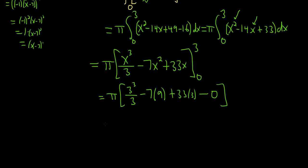So this is going to be, let's see, pi. You lose a copy of the 3 here. So you have 3 squared. So you have 9 minus 63 plus 99. Wow, okay.